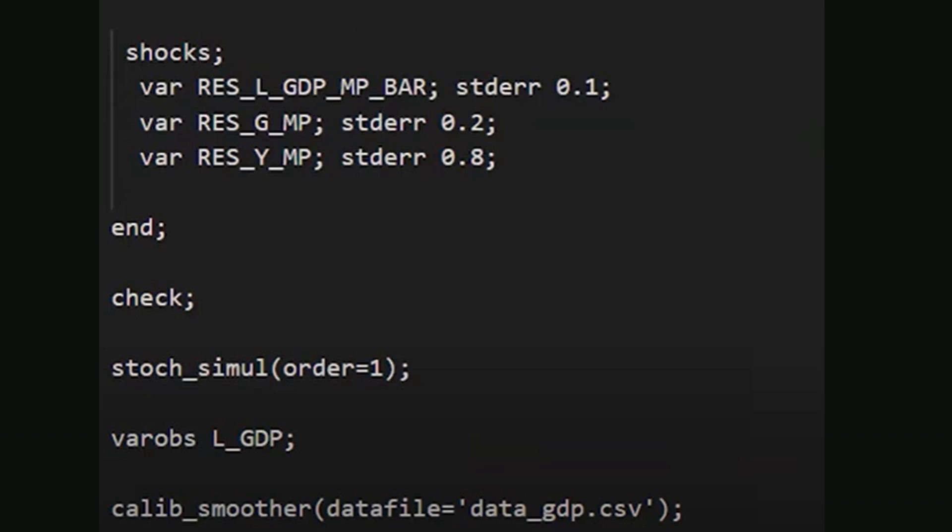The Kalman filter, a two-sided smoother, is executed using the command calib_smoother with the data file specified in parentheses.